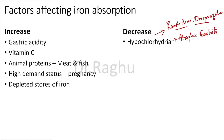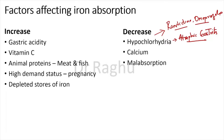Atrophic gastritis is an autoimmune disorder wherein auto-antibodies destroy the parietal cells that secrete HCl, affecting iron absorption. The next factor is calcium — never prescribe iron tablets together with calcium. If the person is already taking calcium, instruct them to take iron and calcium with a gap of about one to two hours.